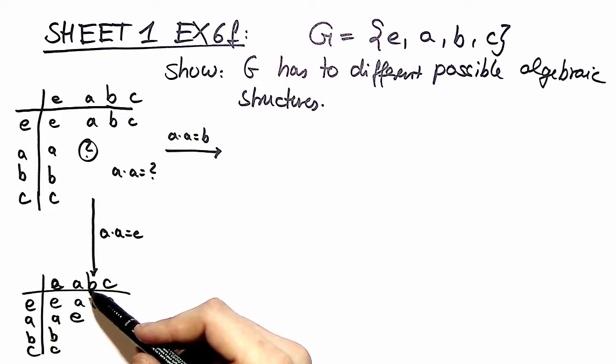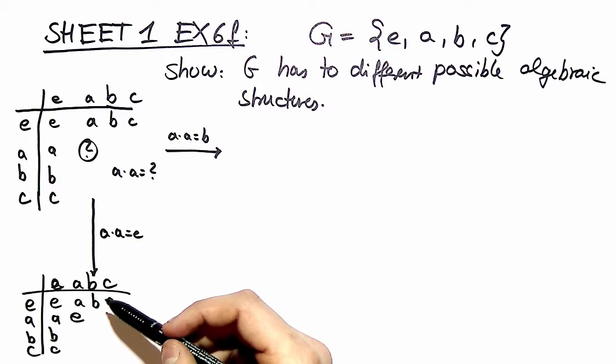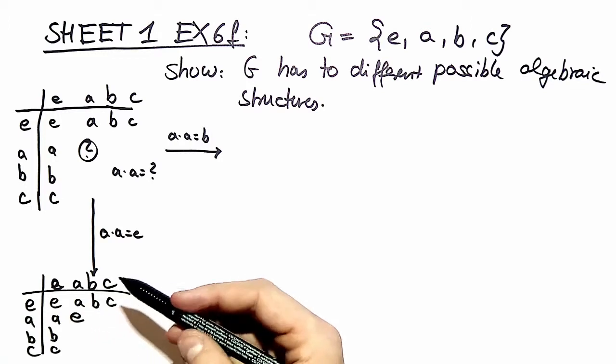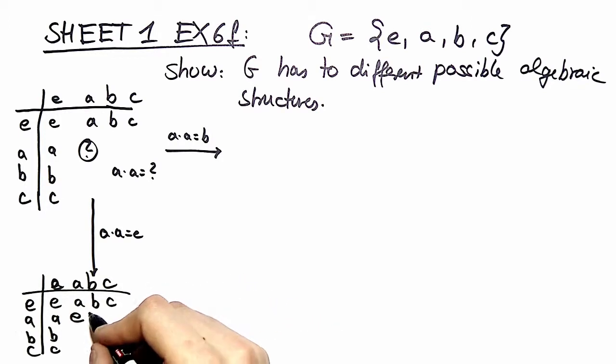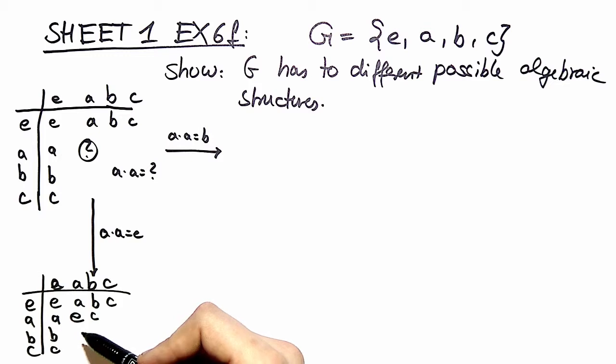First choice is a times b is equal to c. Other choice would be a times b equal to b. Why can't a times b equal to b? Because then it would imply b being the identity element and we are left with the remaining choice a times b equal to c. The other two choices are already taken because of the rearrangement theorem.